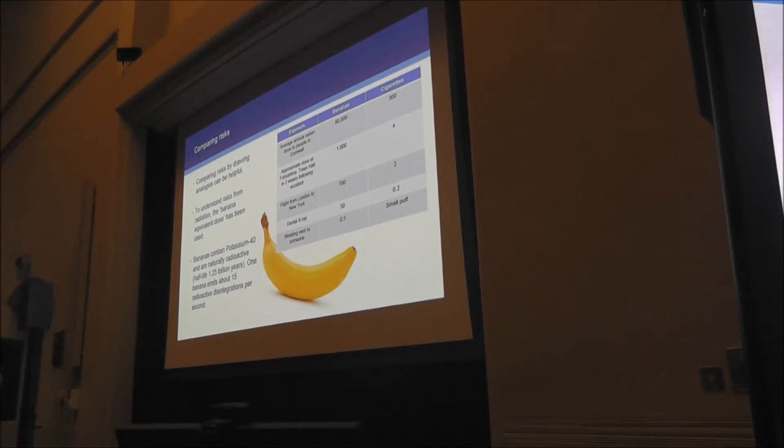You end up with—the average radiation dose of people living in Cornwall. Cornwall has granite, granite has uranium in it, uranium decays to radon, radon's a gas, it comes up—it's quite natural. Radiation dose living in Cornwall is equivalent to eating 80,000 bananas. The approximate dose at Fukushima Town Hall in the two weeks following the accident was the same as eating 1,000 bananas. Flying from New York to London, because of cosmic radiation, less shielding up there than at ground level—700. Dental x-ray, 50. And sleeping next to somebody gives you the equivalent of half a banana because the person next to you is radioactive. If you're going to sleep with two people, don't sleep in the middle is the advice.